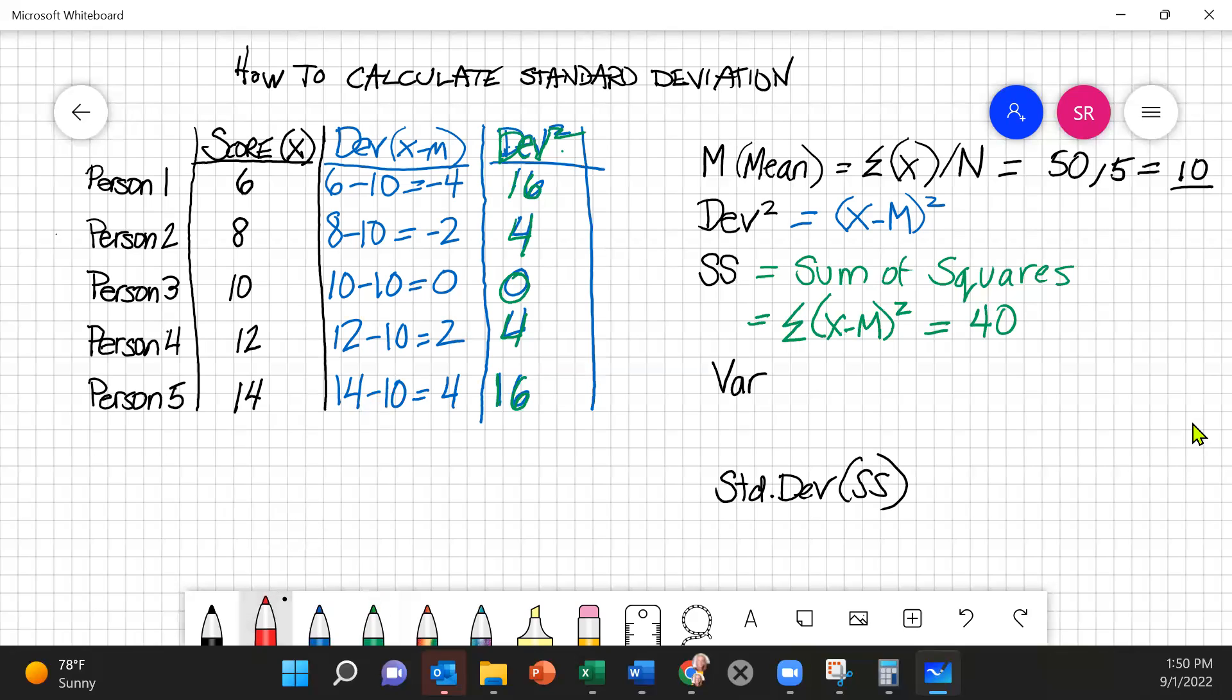Next, we calculate our variance, which is that odd score that we're going to be using throughout this chapter whenever we are calculating with numbers. Our variance is simply sum of squares divided by n. Remember, there are different ways of calculating variance. But for now, this is how we're calculating variance. In this case, we have our sum of squares, which is 40 divided by n, which equals 5. And so our variance is equal to 8.